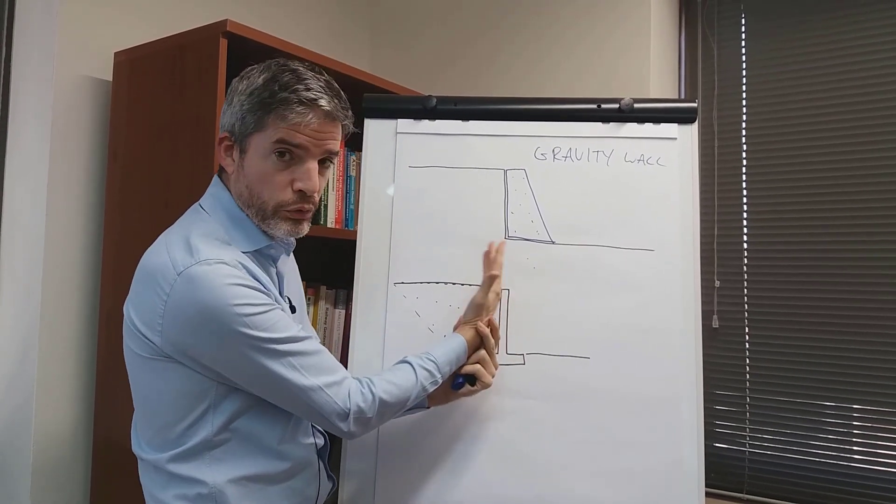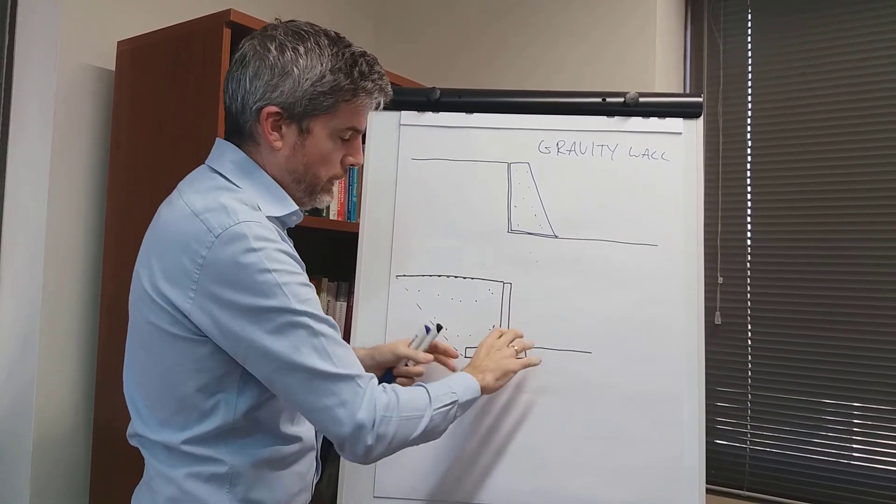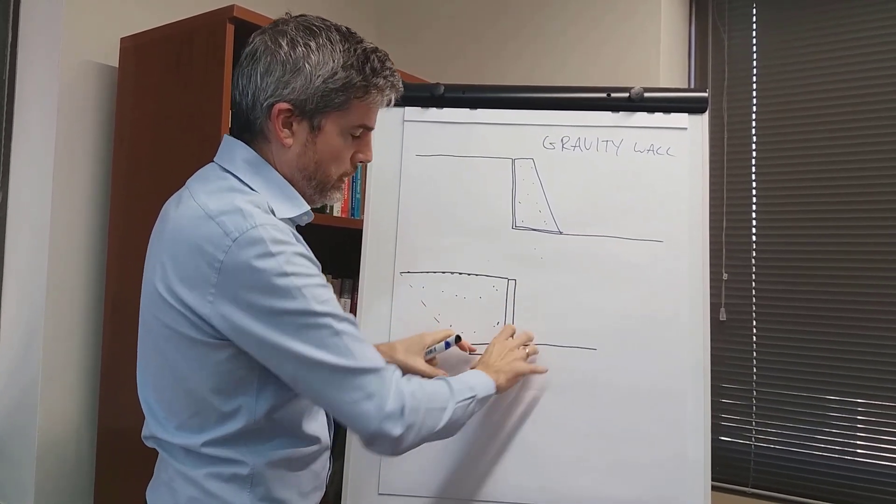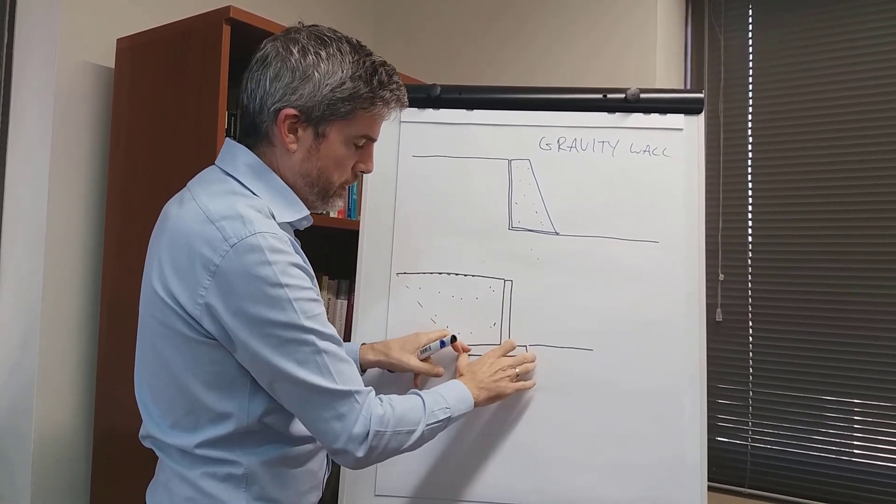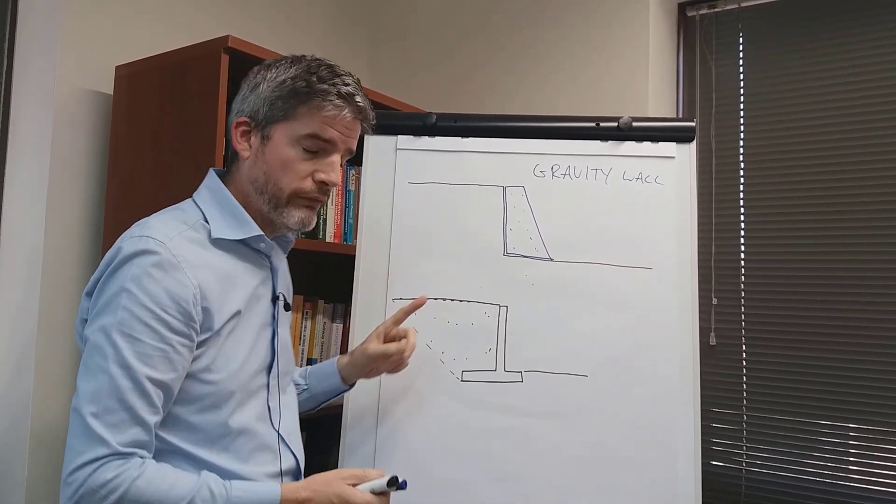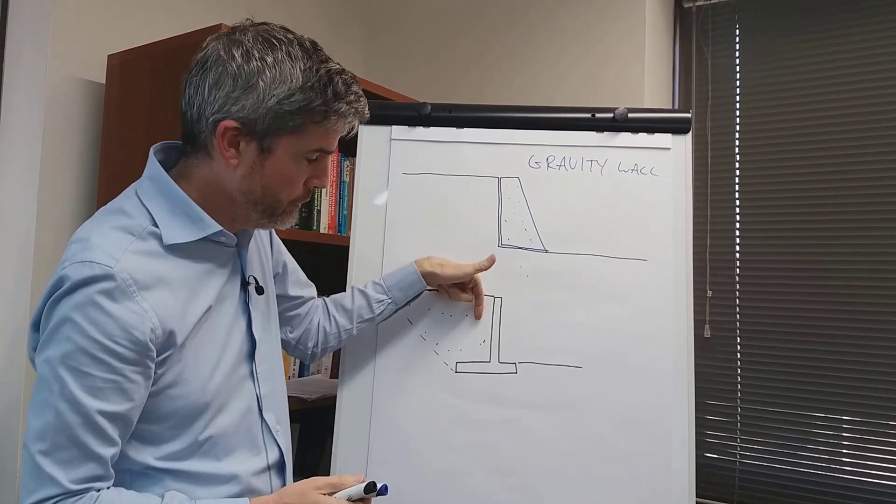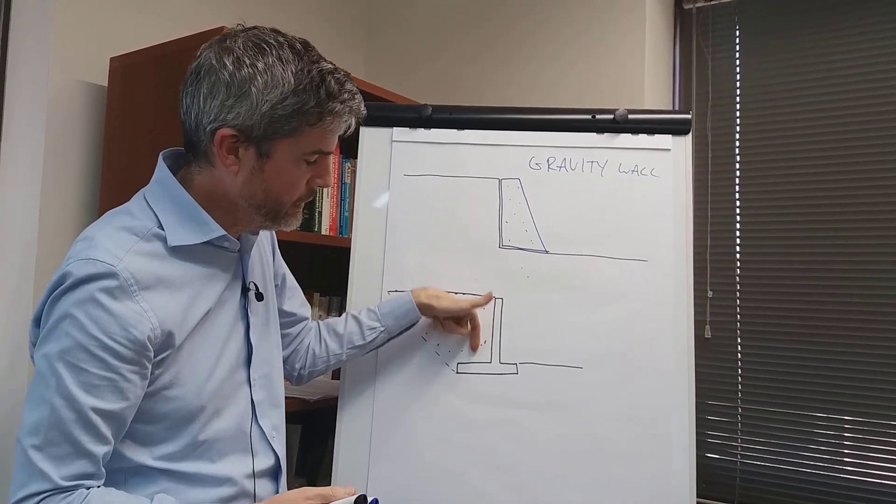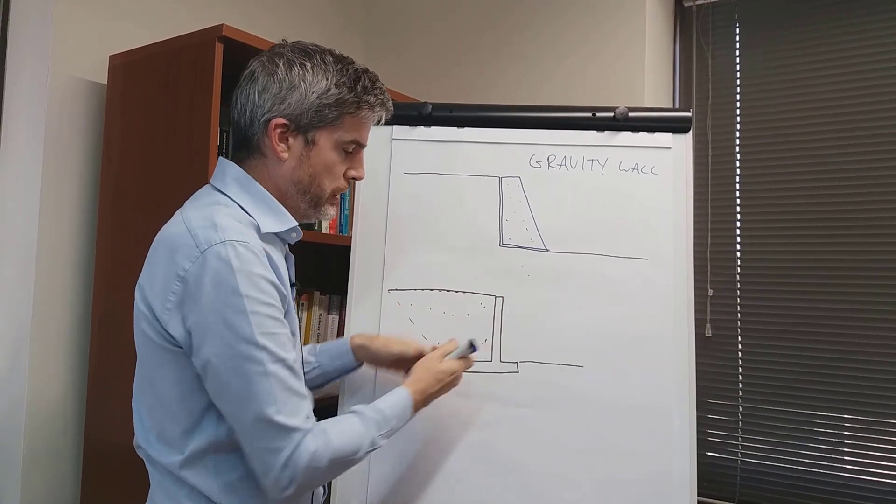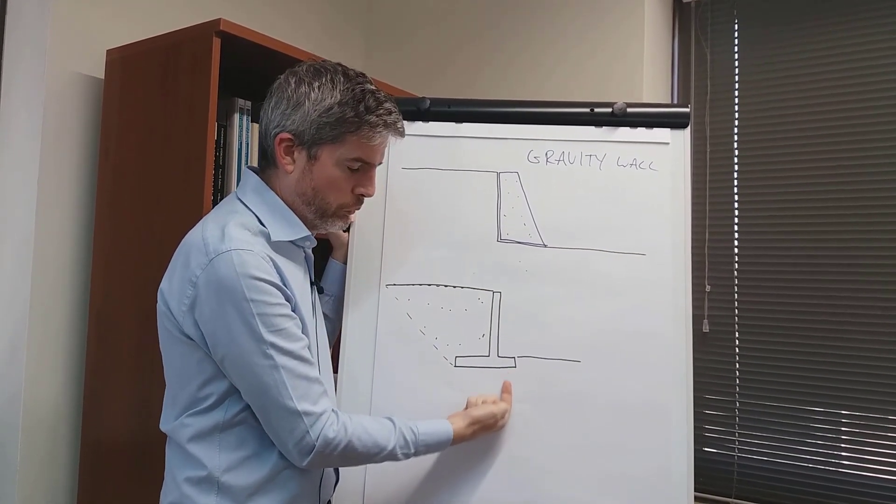The horizontal pressure from the soil is resisted by, instead of self-weight, it's actually resisted like a piece of structure—it's a cantilever. It's a reinforced concrete cantilever. If the soil pushes forward like that, it resists it by bending, but of course it needs to be supported at its root in rotation. That's what the long base is for.